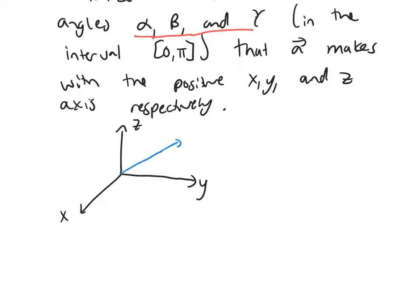So I have some sort of vector A coming out of the origin. Here's the vector A. And then the angle alpha goes from the positive x-axis up to your vector A. So here's alpha.